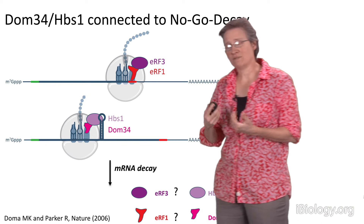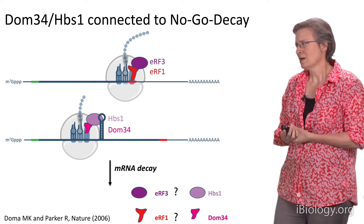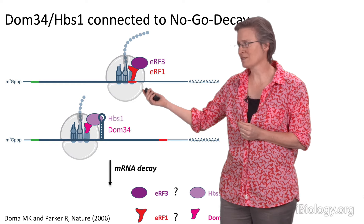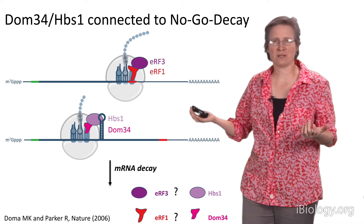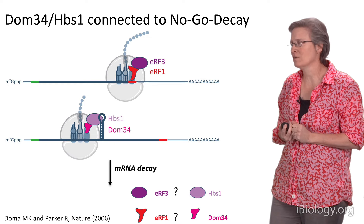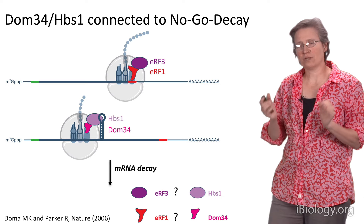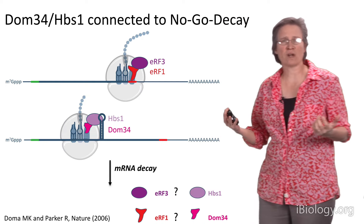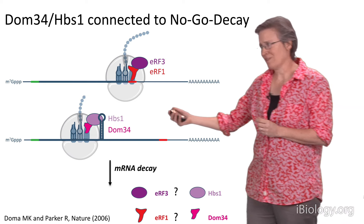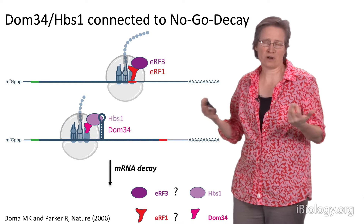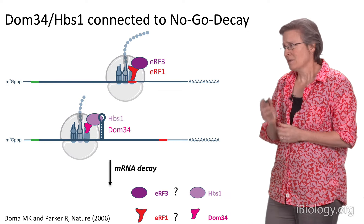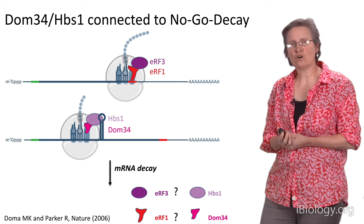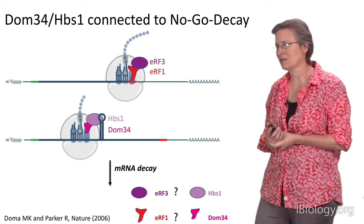We became interested in these mRNA surveillance processes because of an interesting observation in the literature. We had studied the termination process in eukaryotic systems, whereby a stop codon is recognized by termination factors to release the growing polypeptide chain. A publication from Roy Parker's lab inserted a long 34-base-pair stem-loop structure into a yeast messenger RNA — so large that no ribosome could push through it — and observed that this mRNA was targeted for decay in a process called no-go decay. The key observation was that this decay was dependent on two proteins, DOM34 and HBS1, which turned out to be homologues of the eukaryotic termination factors eRF1 and eRF3 that we had been studying.